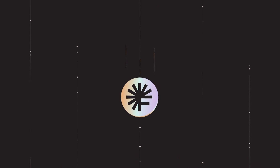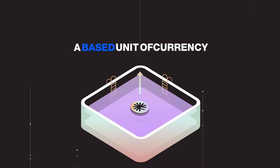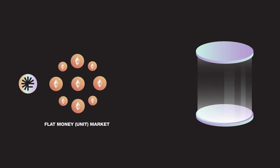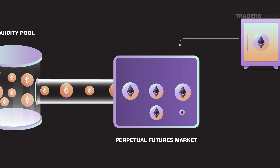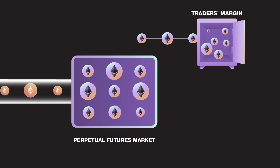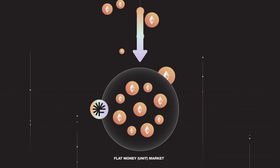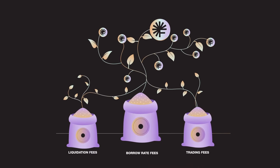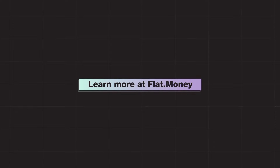Introducing Flat Money, the first decentralized delta-neutral flatcoin built on Base with sustainable yield that's completely untethered from legacy finance — because DeFi needs an uncensorable base unit of currency. You can mint UNIT with rETH, which is held in the protocol's shared liquidity pool where it's borrowed by leveraged traders. As a leveraged trader, you can deposit your margin collateral and go long on rETH. If you're holding UNIT, you'll earn yield from liquidations, borrow rate, and trading fees. Preserve your purchasing power at flat.money.